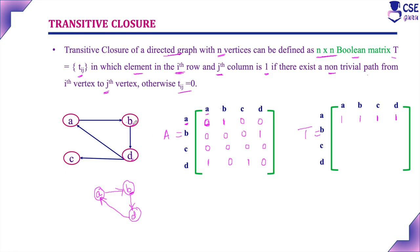For vertex B: B to D, there is a direct path — represent as 1. B to A, there is no direct path, but there is a path through B to D, then D to A — so represent B to A as 1. B to C, there is no direct path, but through B to D, then D to C, there is a path — represent B to C as 1. B to B: through B to D, D to A, and A to B, there is a path — represent B to B as 1.